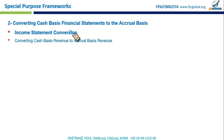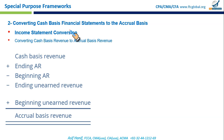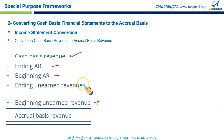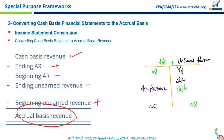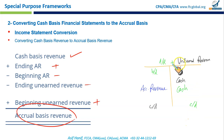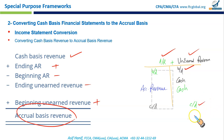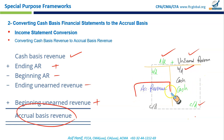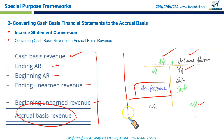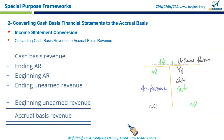To convert a cash based income statement to an accrual basis income statement, you can use a vertical format: take cash-based revenue, add ending accounts receivable, deduct beginning accounts receivable, add beginning unearned revenue, and deduct ending unearned revenue. There is also a convenient T-account format combining accounts receivable and unearned revenue accounts, where the balancing figure gives you the accrual-based revenue.